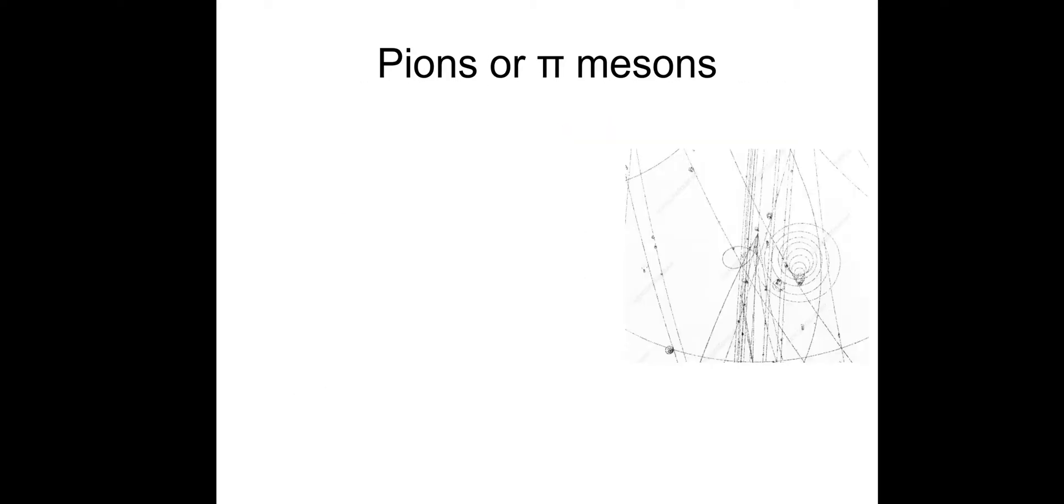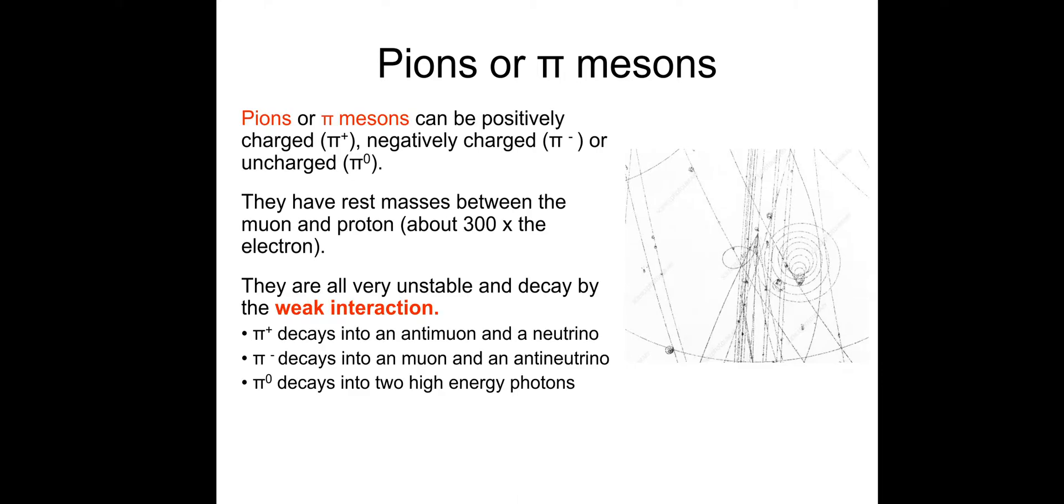Pions or Pimesons can be positively charged, negatively charged, or uncharged. You have a Pi plus, a Pi minus, and a Pi zero. When we do the Quark video, you will be expected to recall the Quark compositions for these three particles. They have rest masses between the muon and proton, so they're about 300 times the mass of an electron.